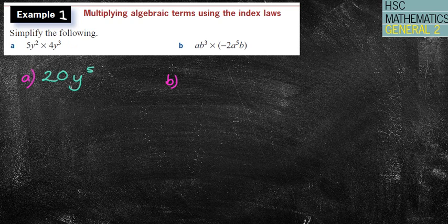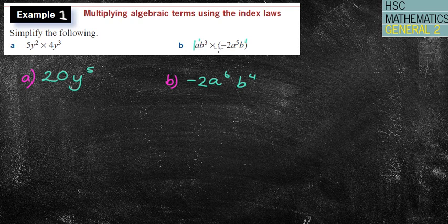The next one, b. So we've got no numbers there. Well, I've got 1, I guess. 1 times negative 2. That's just negative 2. a times a to the power of 5. Well, that's a to the power of 1 times a to the power of 5 is a to the power of 6. And then b to the power of 3 times b to the power of 1 is just b to the power of 4. In that case, then the brackets there is just sort of separating the minus, I guess, with the times. So pretty straightforward.